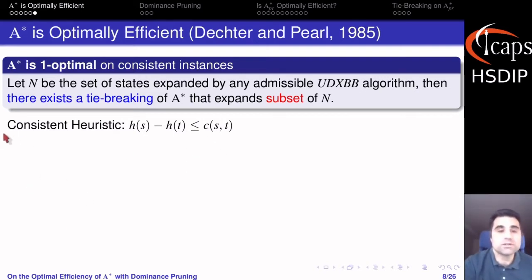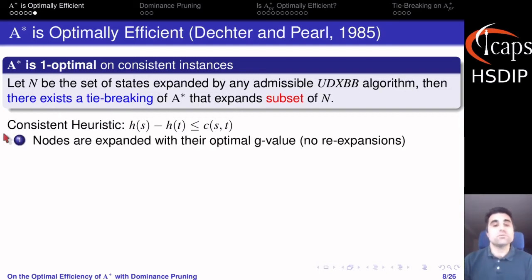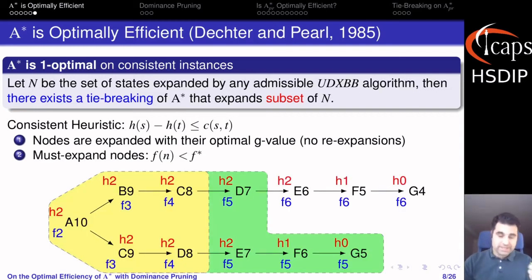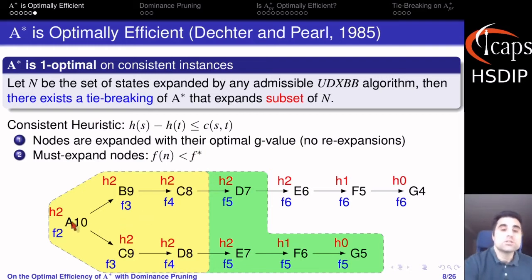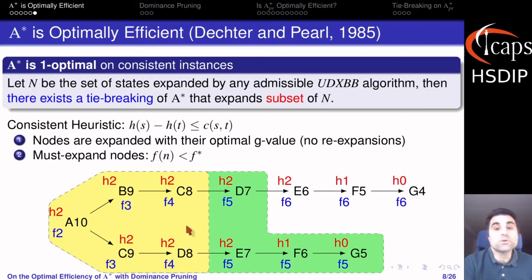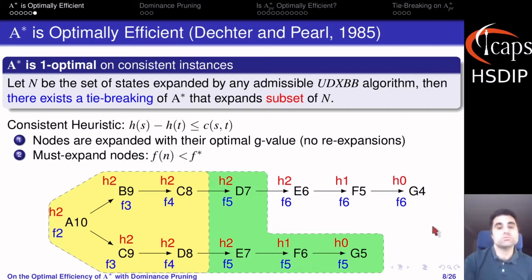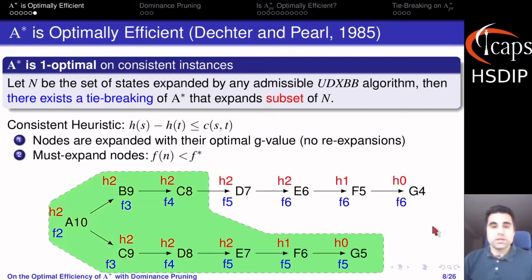Assuming a consistent heuristic gives us many nice properties — for example, that nodes will be expanded with their optimal g value in A-star, and that any algorithm that proves optimality must expand every node with an f value lower than the optimal solution cost. In our example the optimal solution cost is 5, so every algorithm needs to expand all nodes with f value 4 or less. For nodes with f equals 5, A-star expands a subset of them until finding a solution, depending on the tie-breaking strategy.